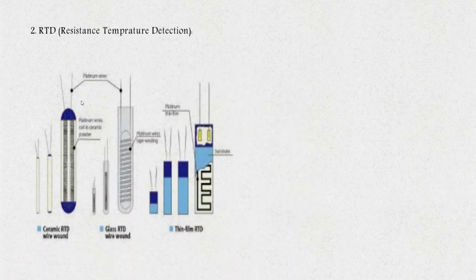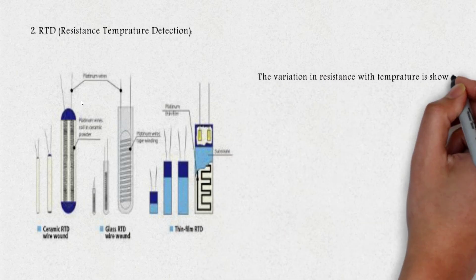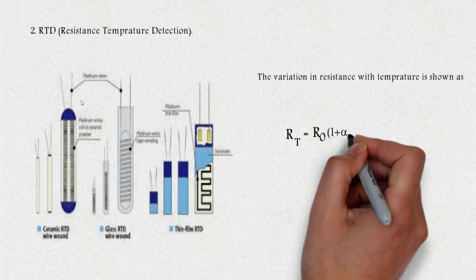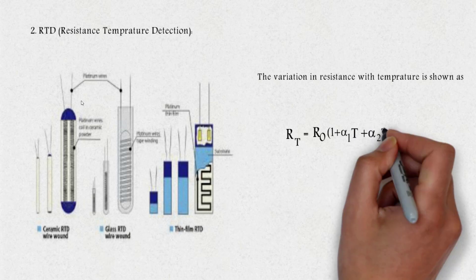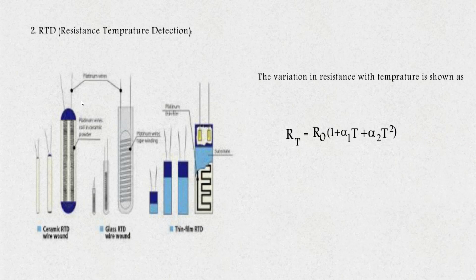Next we have RTD, that is, resistance temperature detection. As we know, resistance of a conductor increases with increase in temperature. This property of a conductor is used to measure the temperature or to sense the temperature. Variation in resistance with temperature can be shown by RT equals R0 multiplied by 1 plus alpha 1 T plus alpha 2 T square, where RT is resistance at temperature T degrees Celsius, R0 is resistance at temperature 0 degrees Celsius, and alpha 1 and alpha 2 are the coefficients of temperature of the particular conductor.